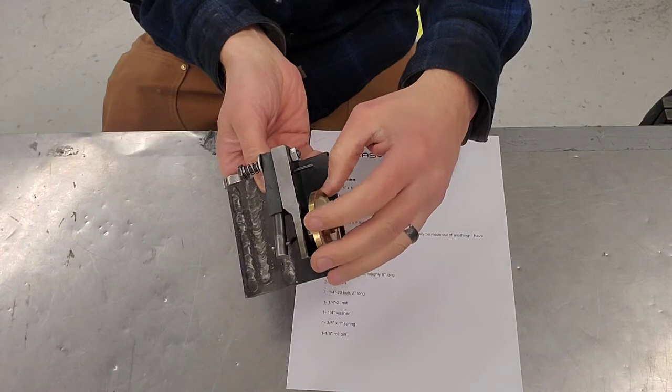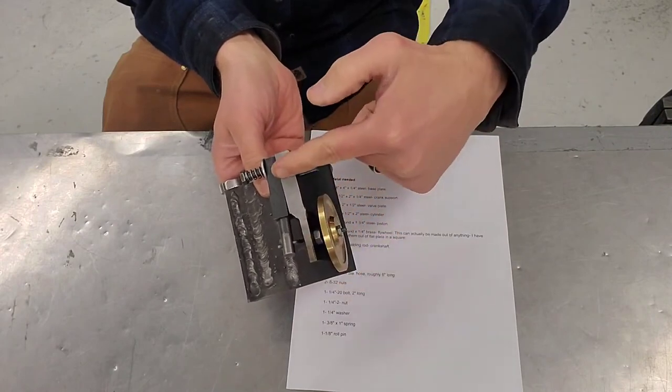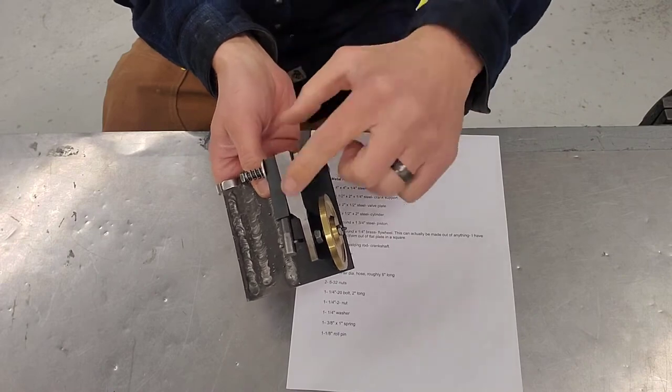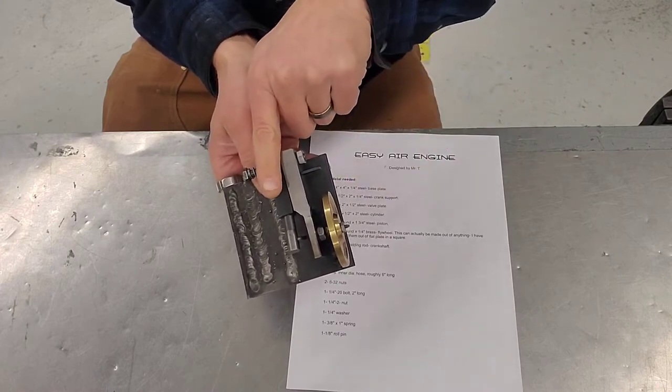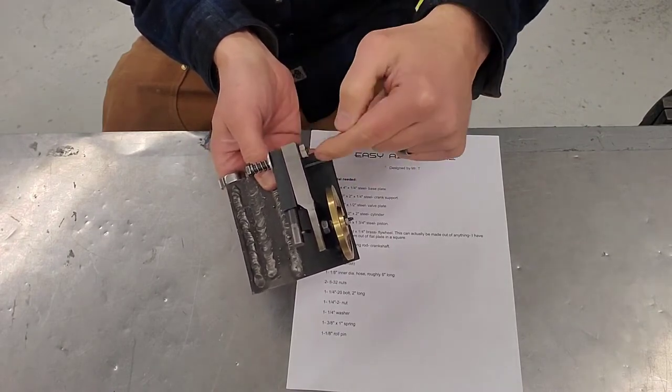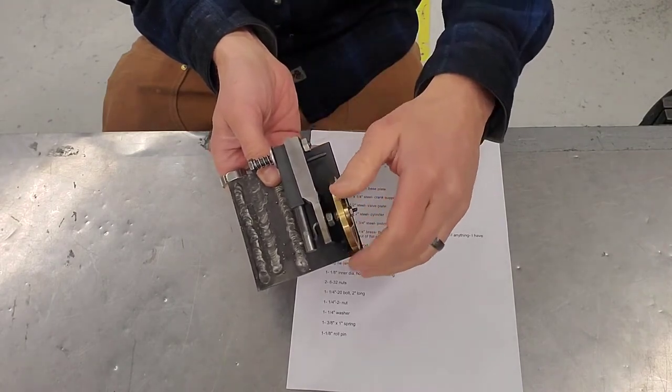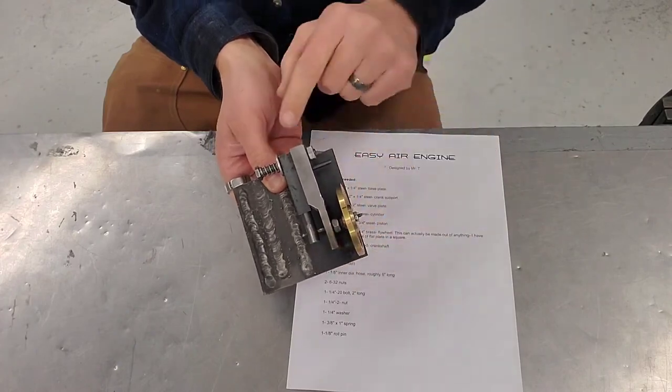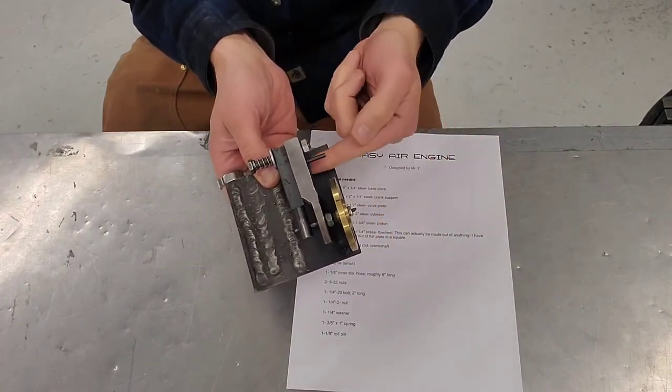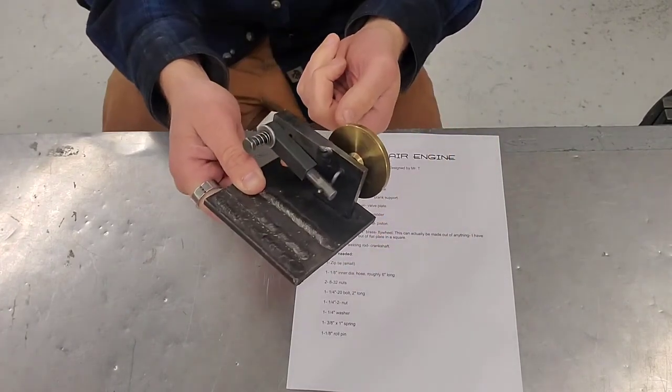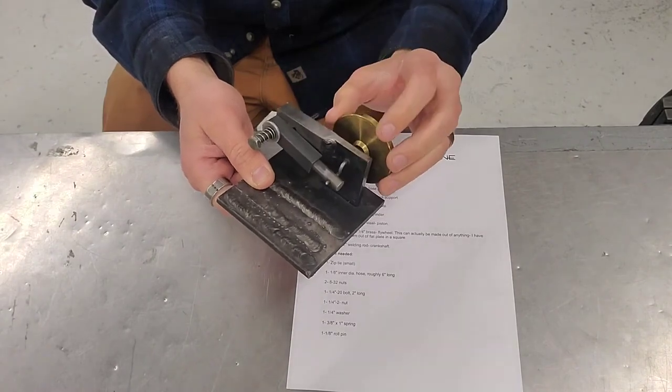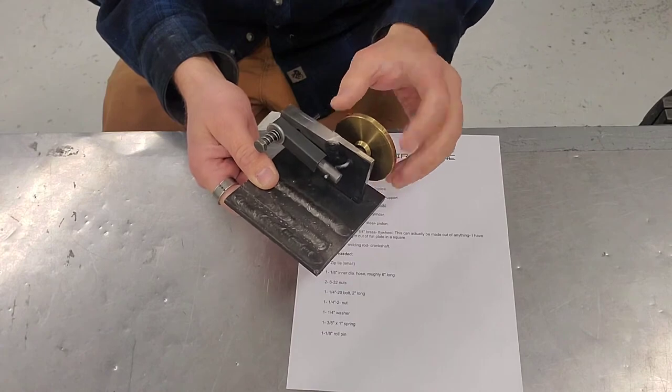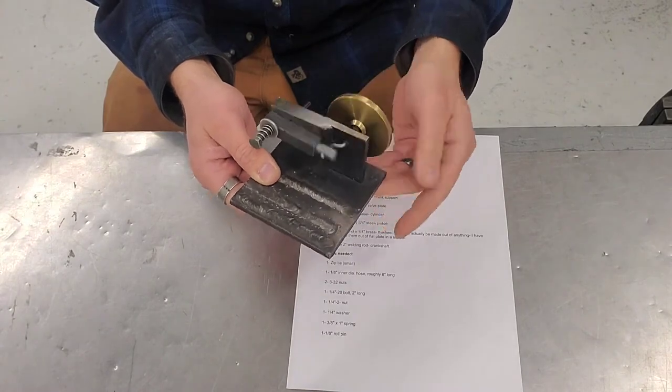High pressure air comes in, goes through the valve plate here into the cylinder. When the cylinder is up like this, the hole lines up with this. Air pressure pushes the piston down. The flywheel continues the piston to come back up. There's another hole that acts as an exhaust port underneath. And as the piston comes back up, it pushes air out and just repeats the process over and over.